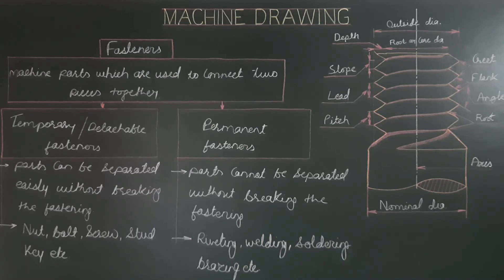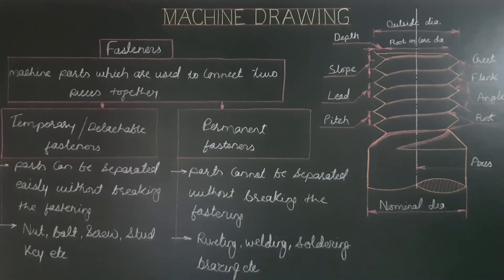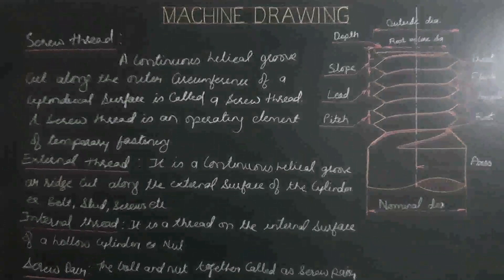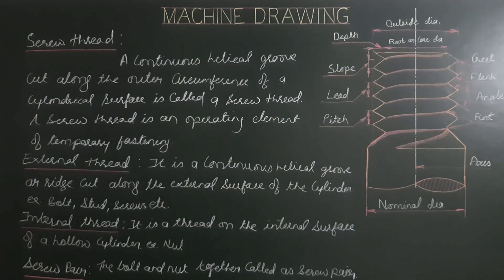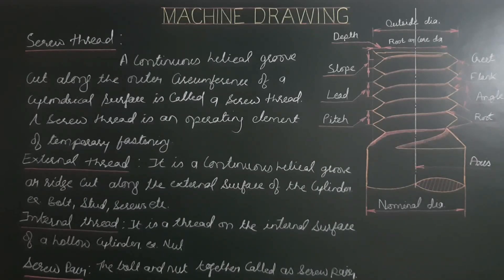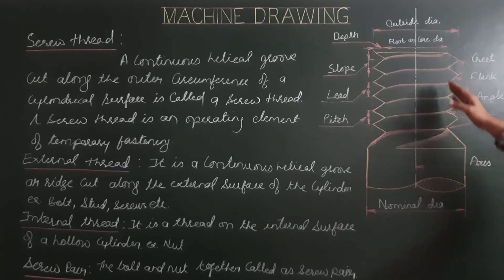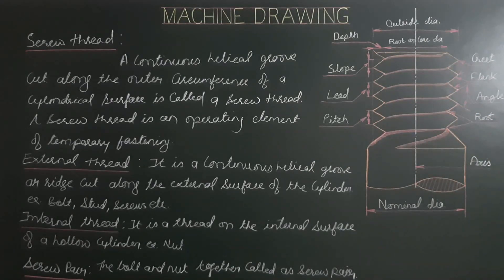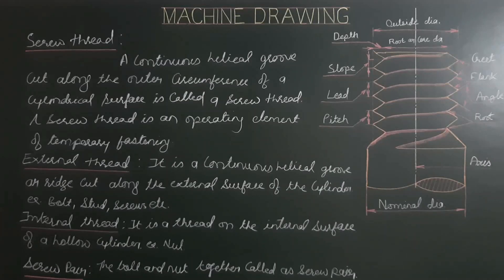For permanent fasteners, parts cannot be separated without breaking the fastening. Examples are riveting, welding, soldering, brazing, etc. Next, a screw thread is a continuous helical groove cut along the outer circumference of a cylindrical surface, and it is an operating element of temporary fastening. External threads are a continuous helical groove or ridge cut along the external surface of a cylinder.